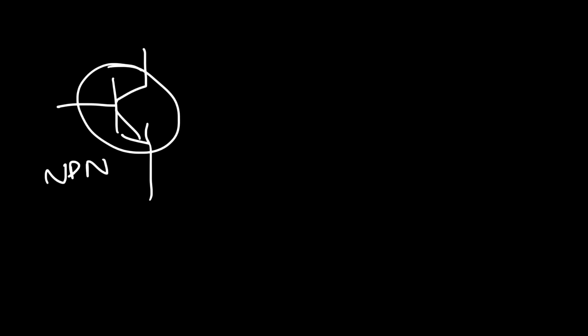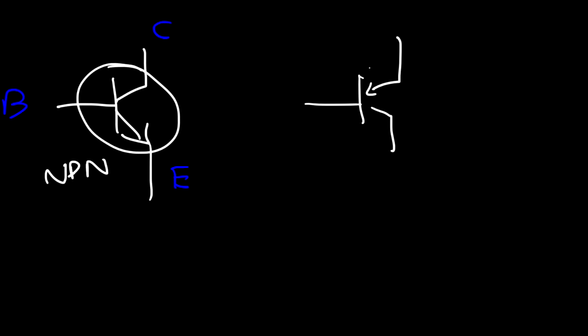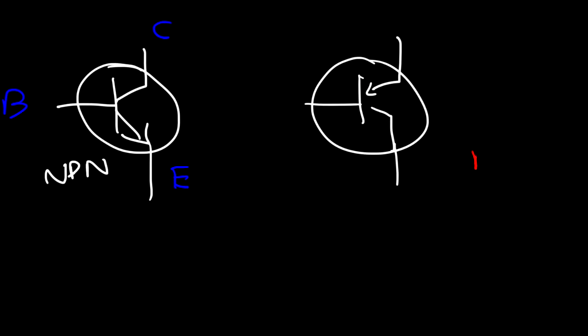The next thing to discuss is the transistor. There are two common transistors to be familiar with. The NPN transistor has a base, emitter, and collector. There is also the PNP transistor. The difference between these two is the direction of the arrow — in the NPN, the arrow points away from the center of the transistor, and in the PNP, it points towards it.